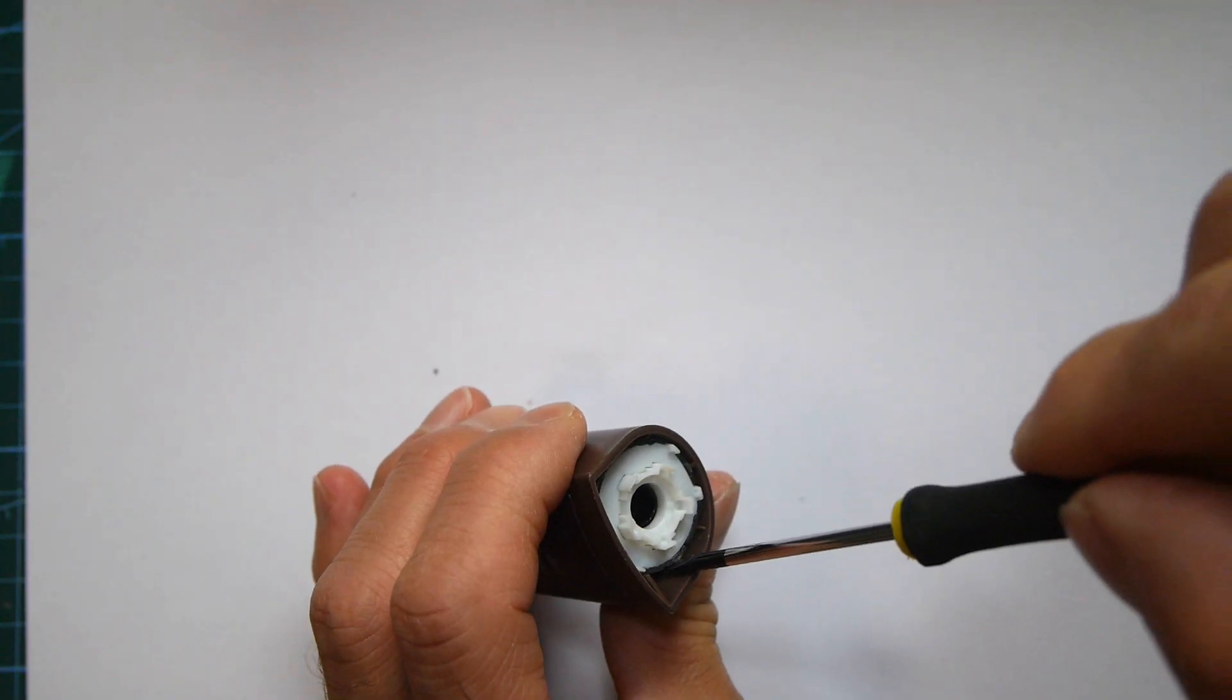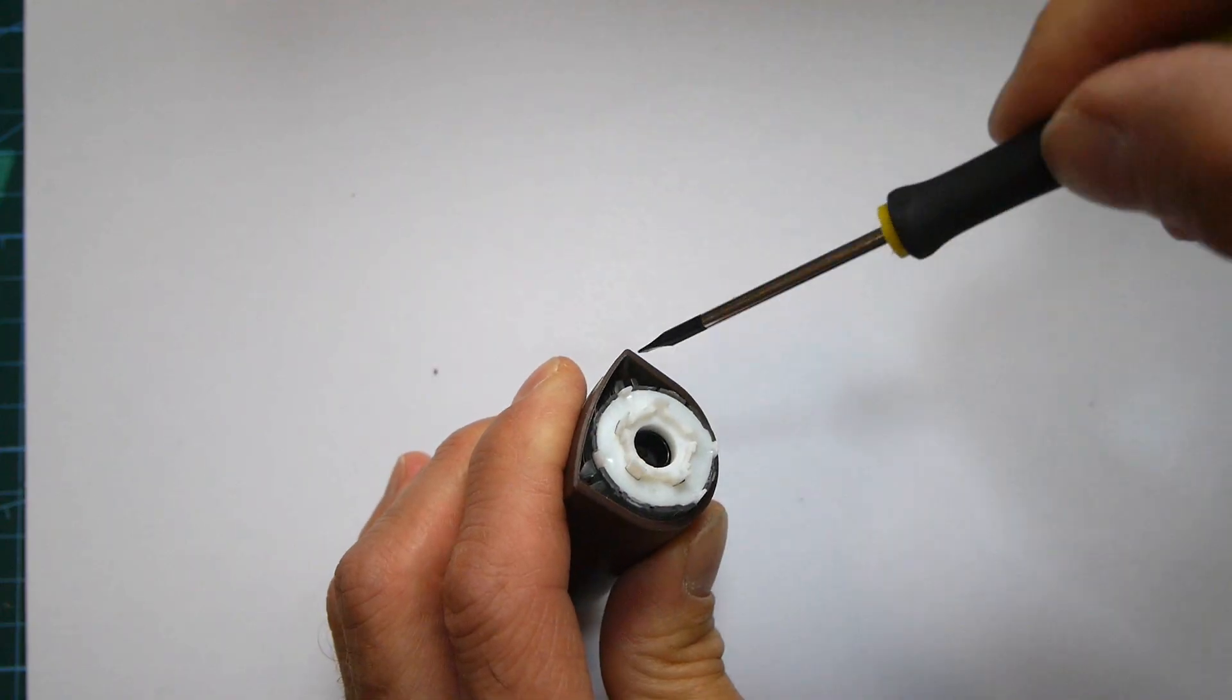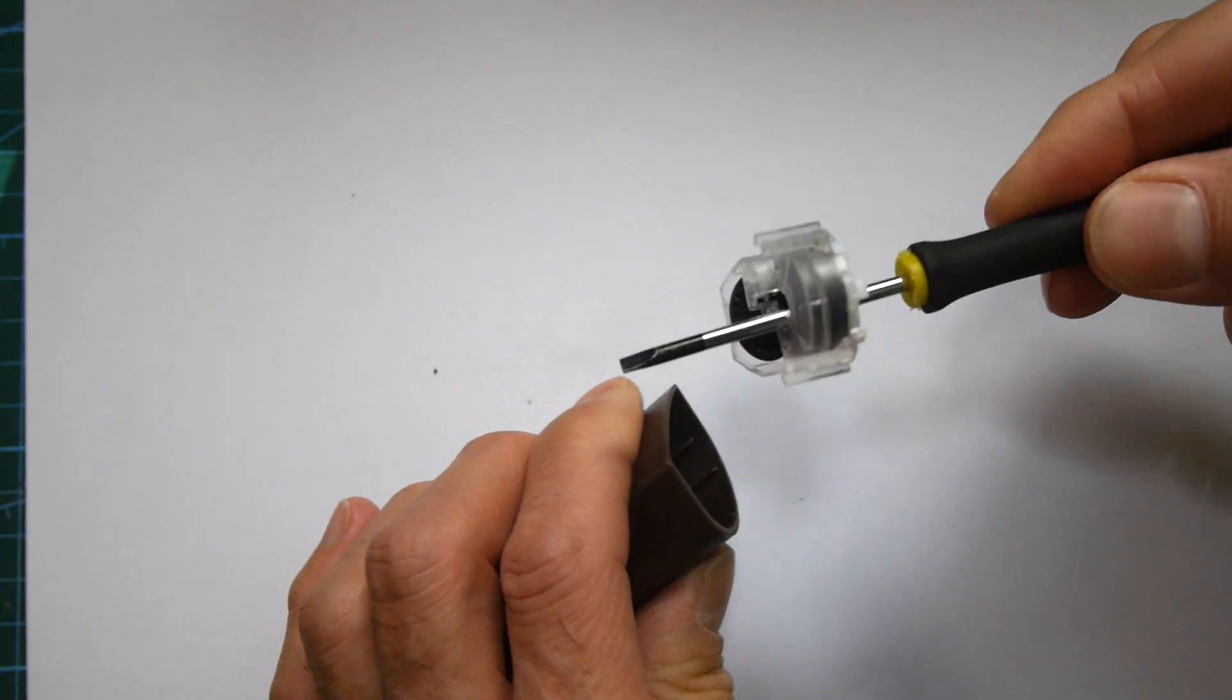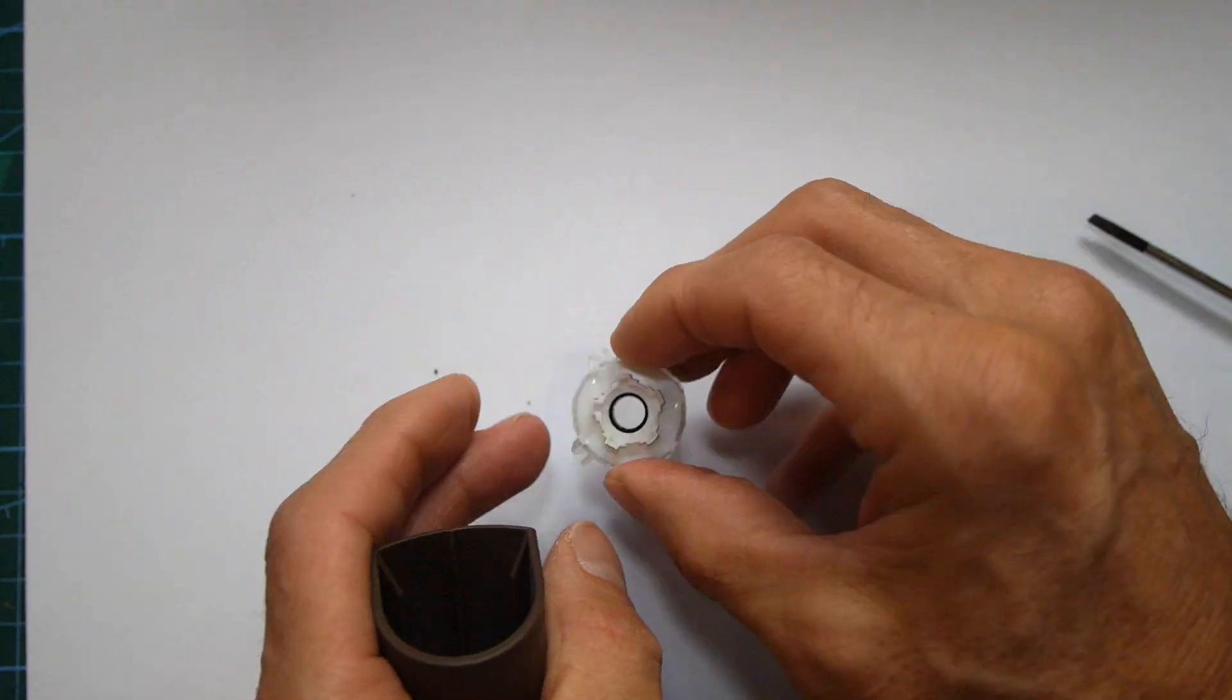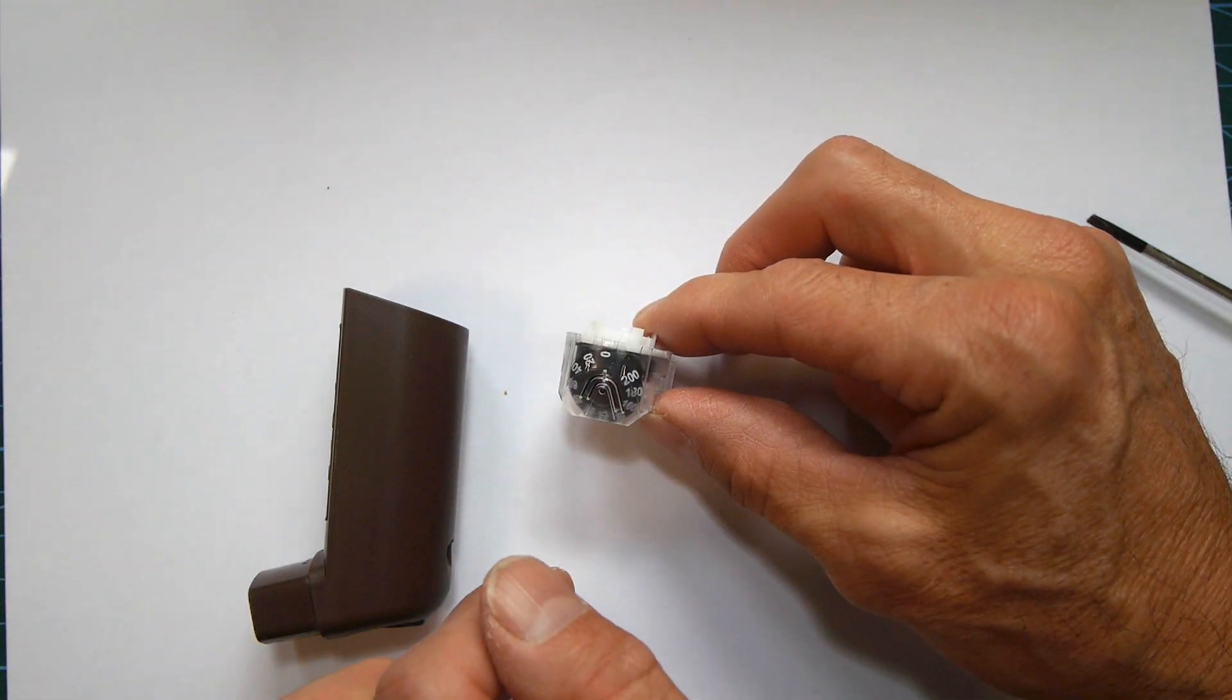Can we prise it with a screwdriver? There we go. And that's the mechanism out. So what we need to do now is take this apart and see how it actually works.